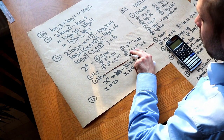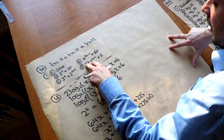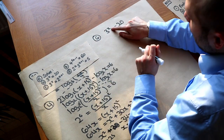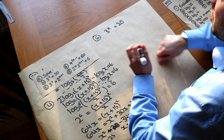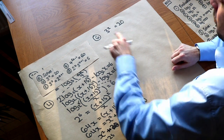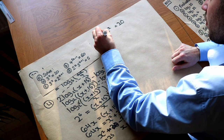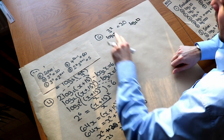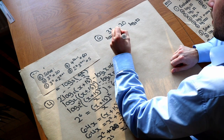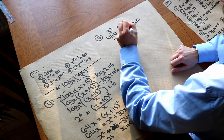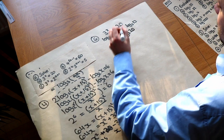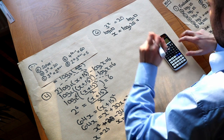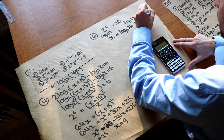Finally, solving equations involving exponentials. For 3^x = 20: to get rid of '3 to the power of', apply the inverse — log base 3 of each side. That leaves just x on the left, and log base 3 of 20 on the right. Using a calculator, that gives 2.73 to 3 significant figures.